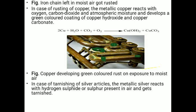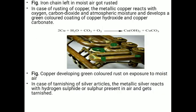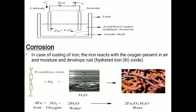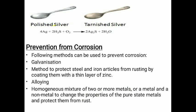As shown in the diagram, an iron chain exposed to air, oxygen, and water collects rust (Fe₂O₃). In the case of copper, metallic copper reacts with air (oxygen and carbon dioxide) and atmospheric moisture to develop a green color coating of copper hydroxide. In the case of tarnishing of silver, metallic silver reacts with hydrogen sulfide and sulfur present in the air and turns into silver sulfide. This is called corrosion of metals.